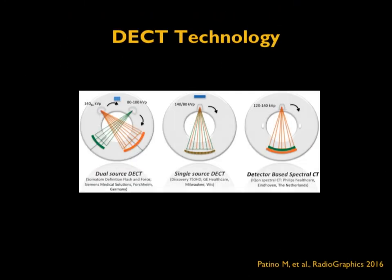In summary, dual-energy CT technology is achieved by four methods: first, two x-ray tubes such as in the dual-source system with two different detectors; second, a single x-ray tube with fast kV switching between 140 and 80 kV to obtain dual-energy spectrum; third, the same x-ray source with two different detector layers separating low and high energy; and fourth, the conventional method of scanning the same anatomical area twice at two different kV settings.